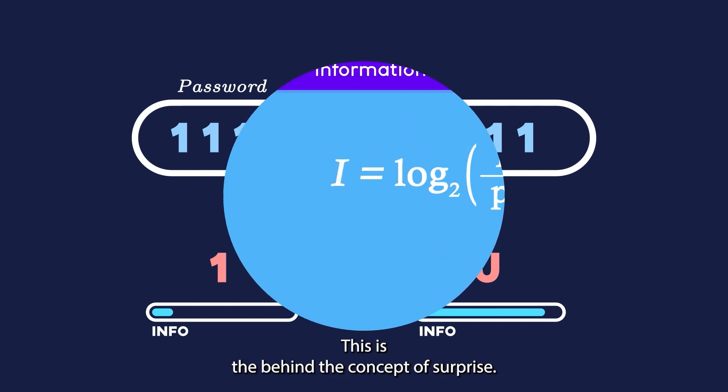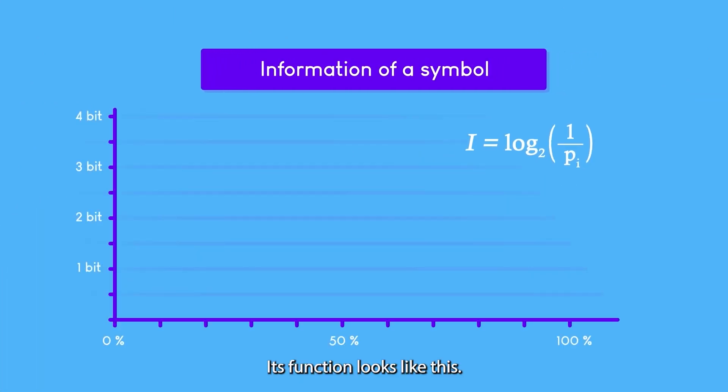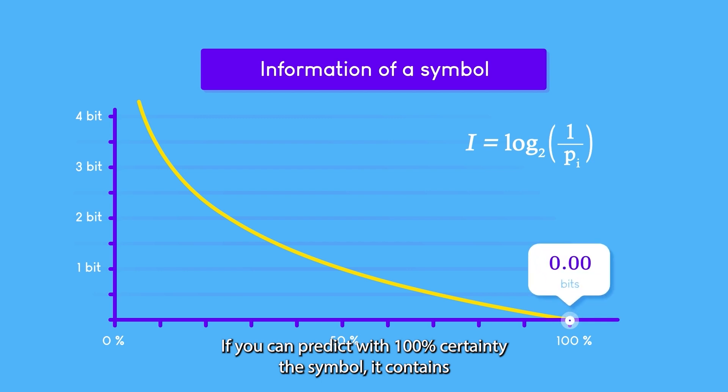This is the idea behind the concept of surprise. Its function looks like this. If you can predict with 100% certainty the symbol, it contains very little information.